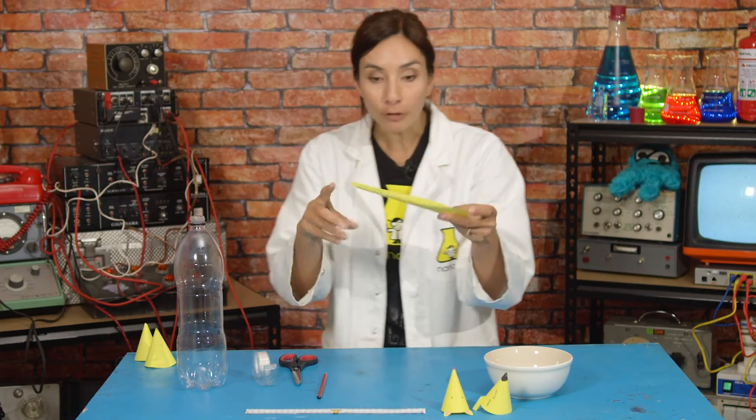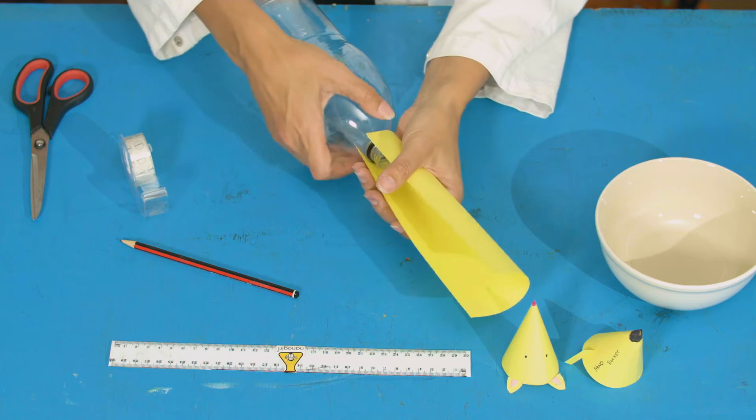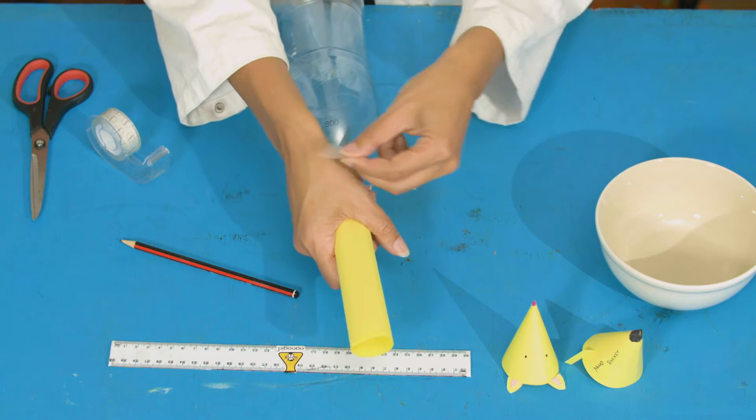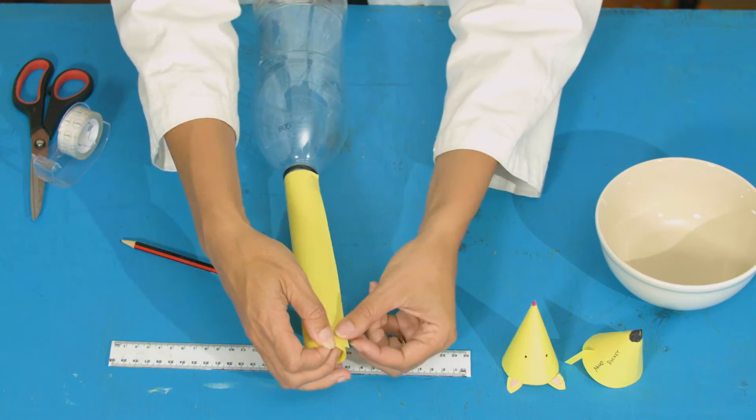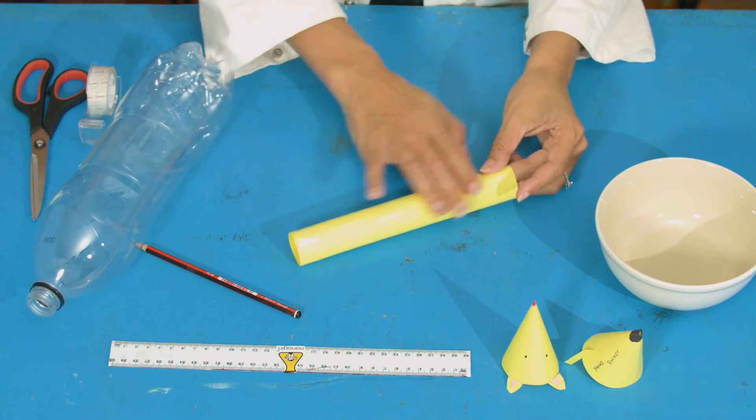Next, you're going to take your leftover bit of rectangle of paper and you're going to roll it around the opening on your bottle to make a straw. And then when it's the right size, I'm going to tape it. Now you want to seal this whole tube with tape to make sure that no air can get in through the side of the tube.